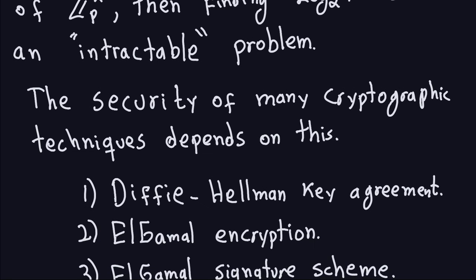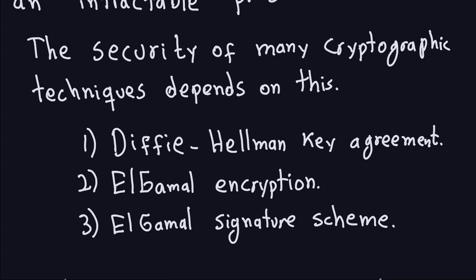Why do we care about this discrete logarithm problem? The security of many cryptographic techniques depends on the intractability of this logarithm — on the fact that computing the discrete log is hard. We will cover two of them in this class: the first is the Diffie-Hellman key agreement, which is important for symmetric cryptography; the second is El-Gamal encryption. And finally, the El-Gamal signature scheme — not an encryption or key agreement, but a signature — is also based on the discrete logarithm problem.